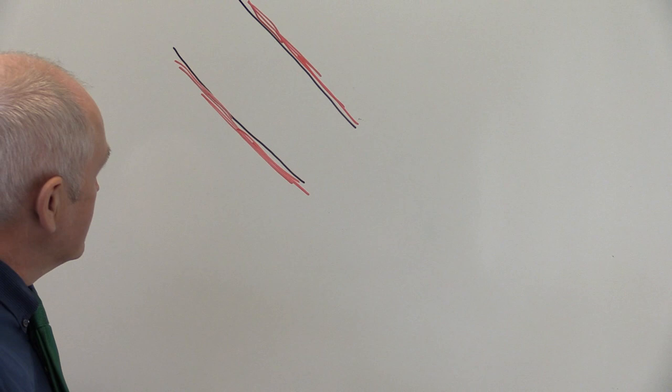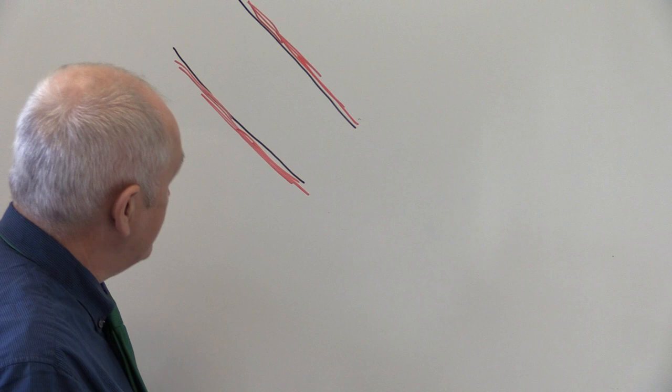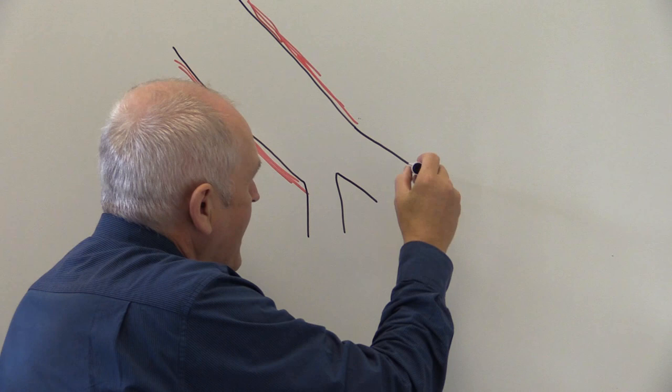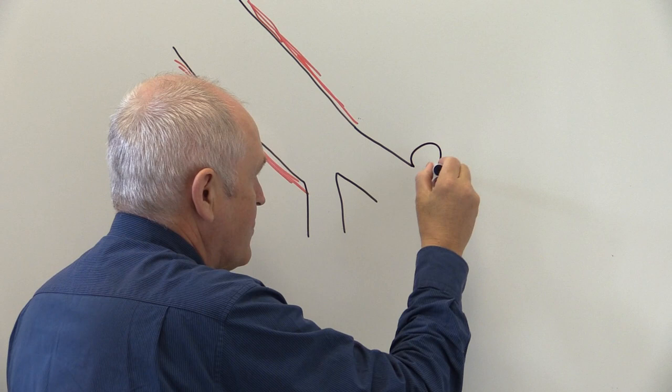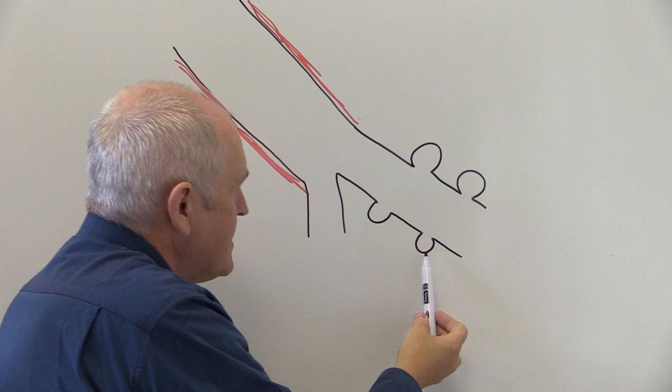The bronchioles will divide — we could call that one a terminal bronchiole — and they will divide into even smaller bronchial passages. These very small bronchial passages have got blebs in their walls, fairly thin blebs, and these are individual alveoli; one of these is called an alveolus.